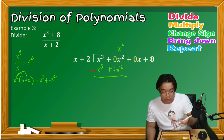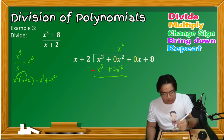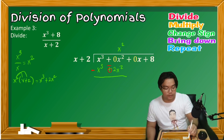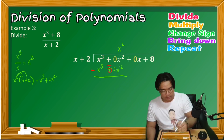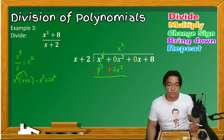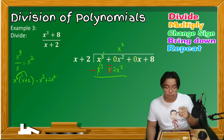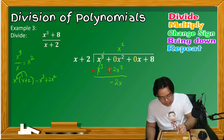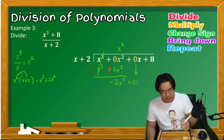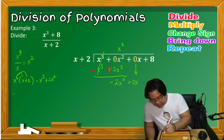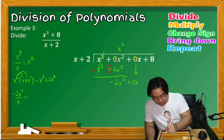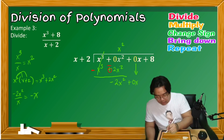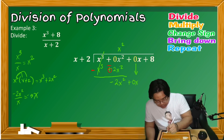Adding: x³ − x³ = 0, and 0x² − 2x² = negative 2x². Bring down 0x and repeat step 1. Dividing negative 2x² by x gives negative 2x, placed on top of 0x.